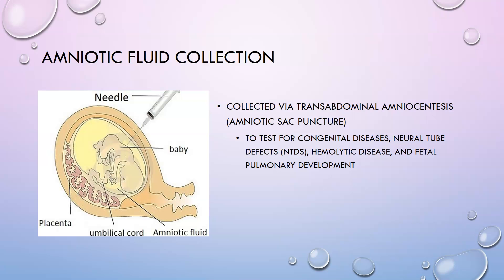Let's talk a little bit about amniotic fluid collection. It is collected via transabdominal amniocentesis — an amniotic sac puncture. A provider uses a needle to go through the abdominal wall, then through the uterus, and into the amniotic sac without damaging the baby, and pulls off some amniotic fluid. That fluid can then be used to test for congenital diseases, neural tube defects, hemolytic disease of the newborn, and fetal pulmonary development.